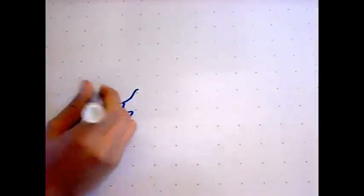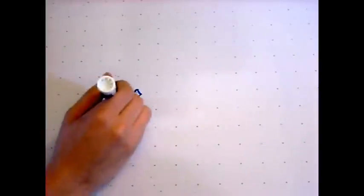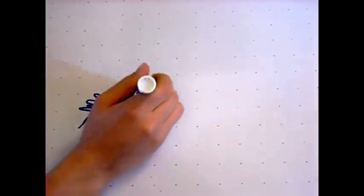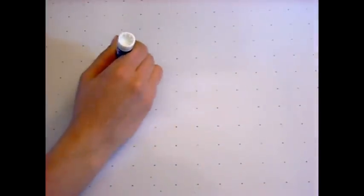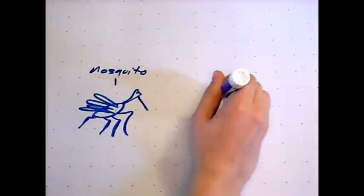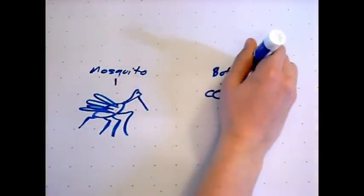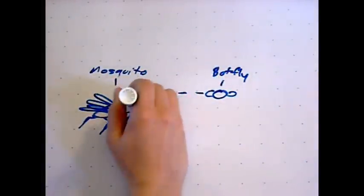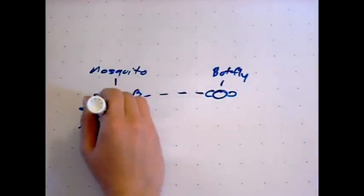The botfly is a master of flight maneuvering. It actually catches a mosquito in mid-flight and sticks its eggs right on the mosquito's body. It's pretty amazing. The eggs are surrounded with a glue-like substance that the botfly secretes, so they aren't going anywhere for the time being.